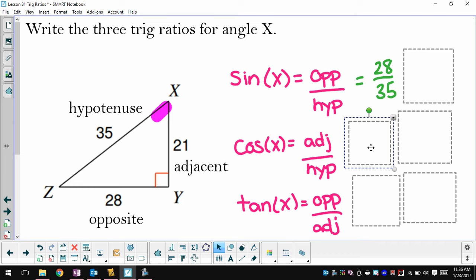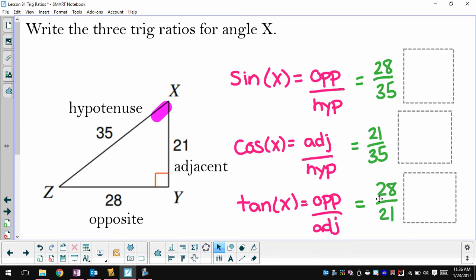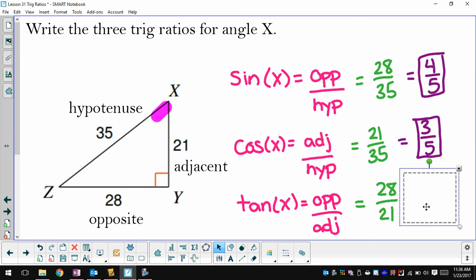So sine is opposite over hypotenuse, that's 28 over 35. Cosine is adjacent over hypotenuse, that's 21 over 35. And tangent is opposite over adjacent, 28 over 21. And whenever you have a fraction, you should always simplify it. So if we reduce all these fractions, we get that the sine of angle X is 4 fifths, the cosine of angle X is 3 fifths, and the tangent of angle X is 4 thirds.